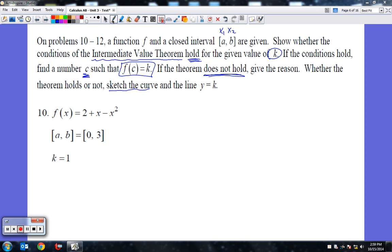So let's first of all sketch the curve and the line. If I rewrite this, f of x equals negative x squared plus x plus 2, I can factor out a negative. I can furthermore factor this out, x minus 2, and then it's going to be x plus 1.